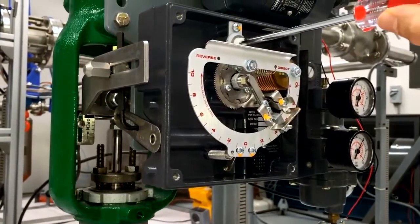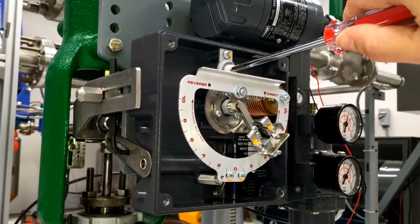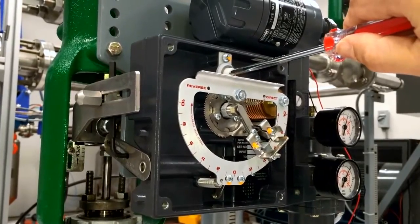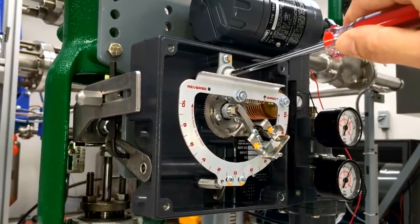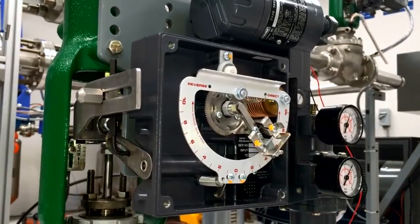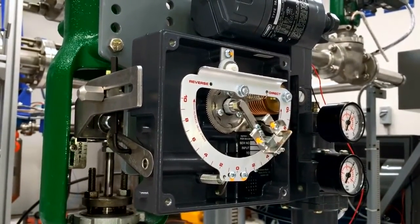The actuator stem should be at the expected travel. If the stem travel is short of its expected range, increase the travel by moving the flapper assembly to a higher number on the beam, and vice versa to decrease the travel.